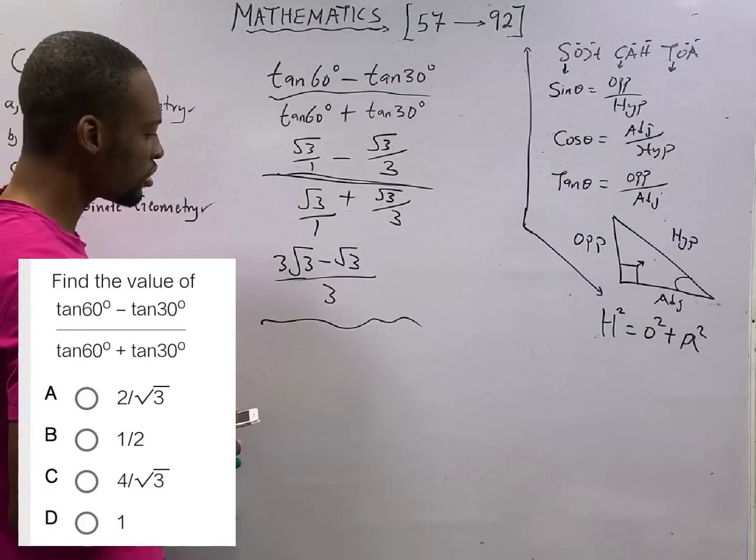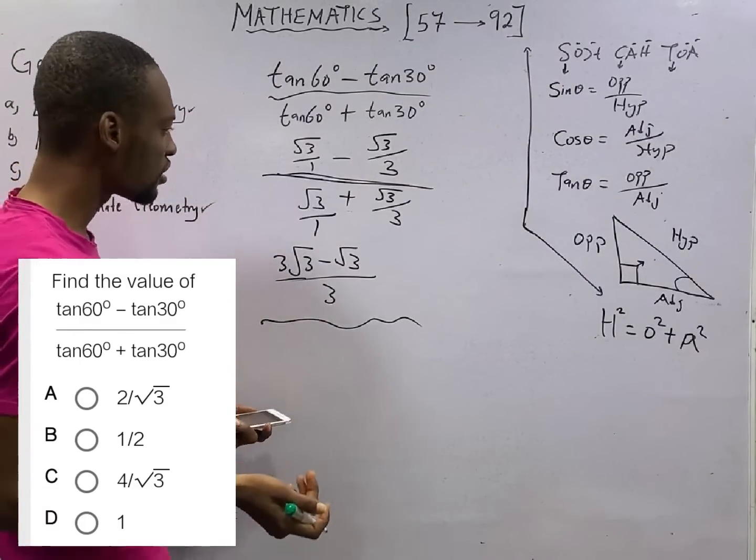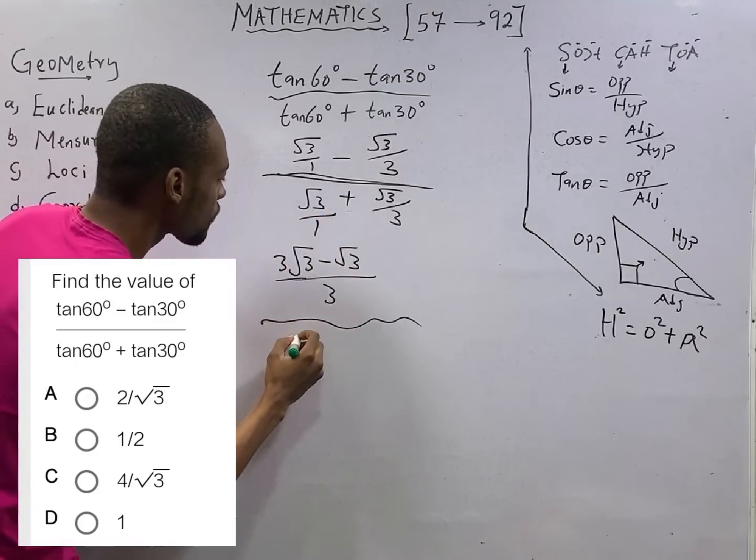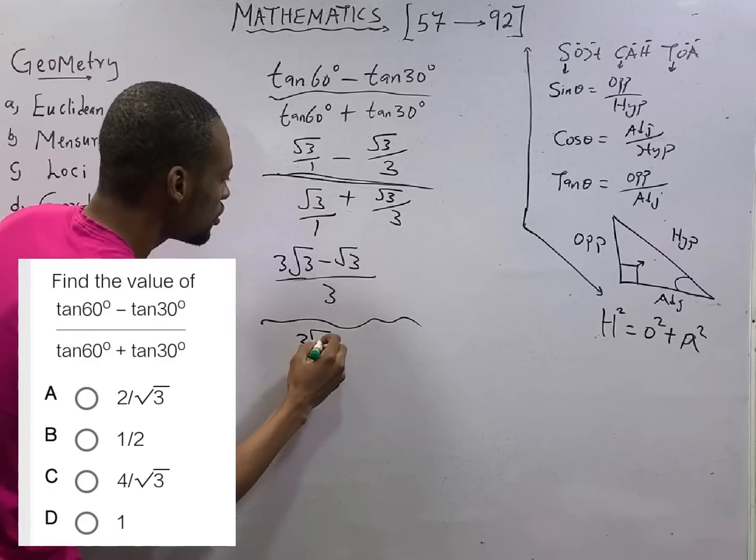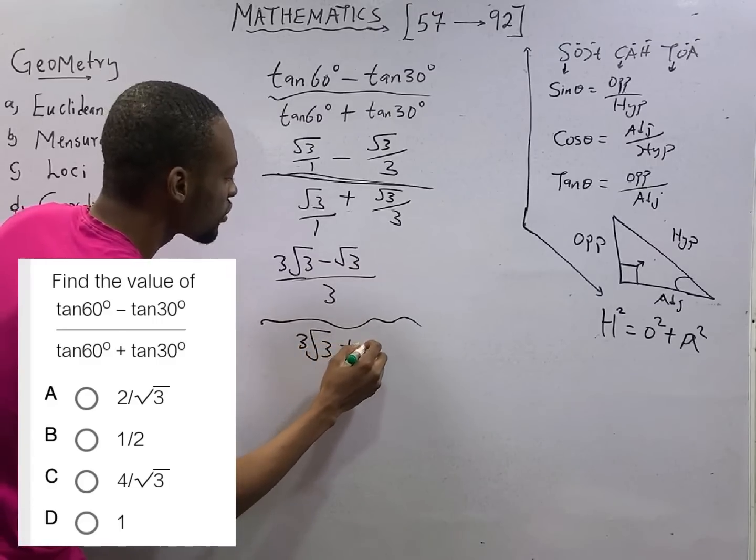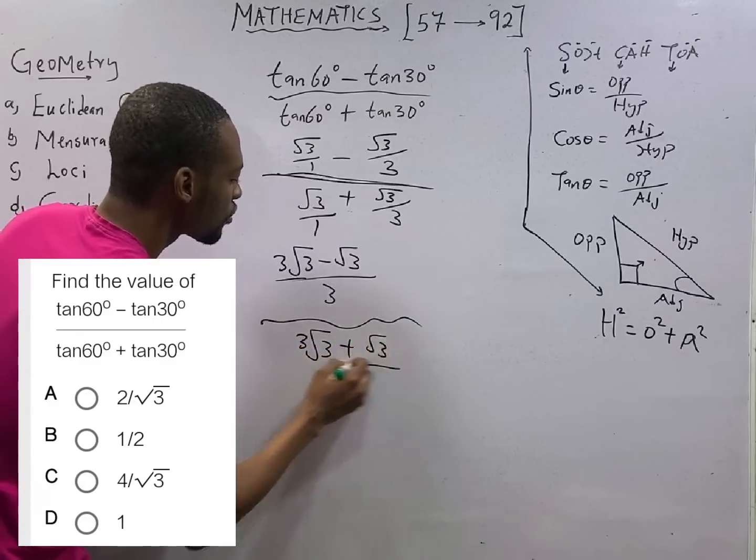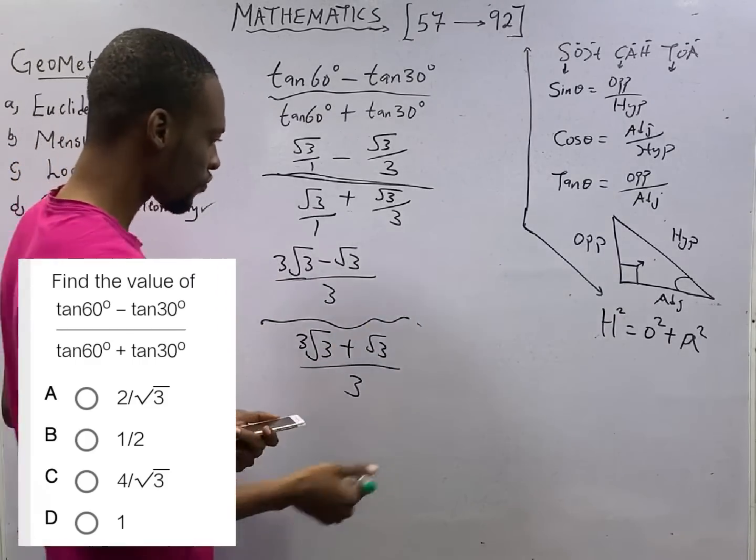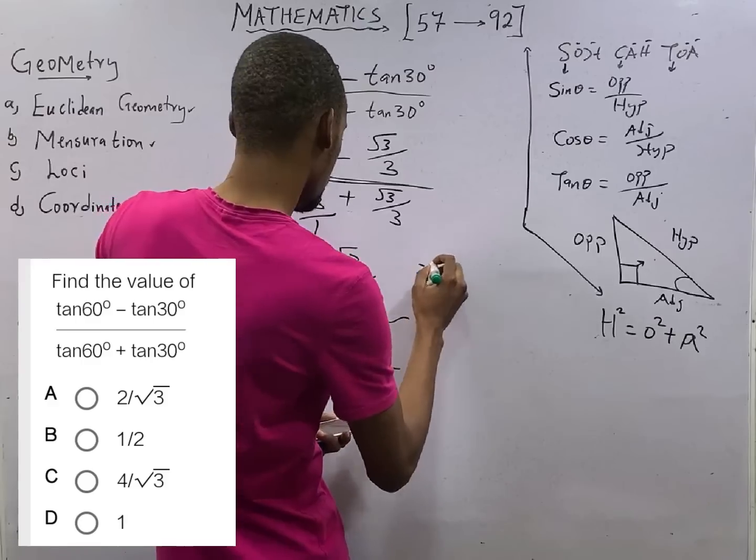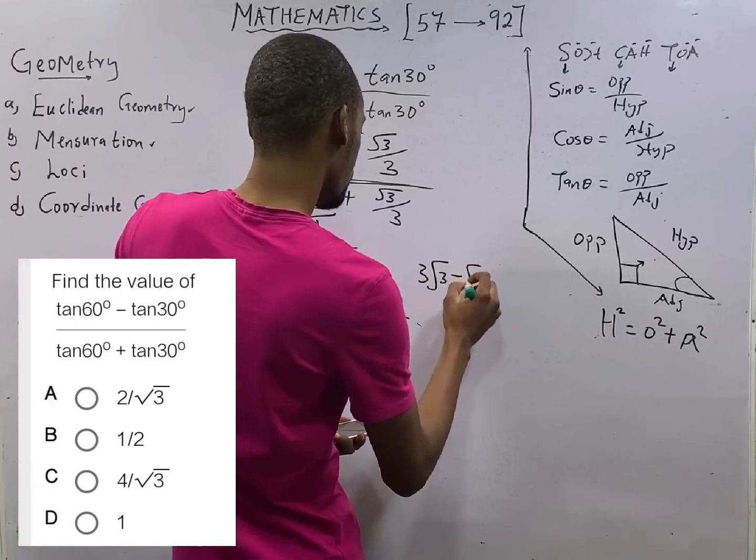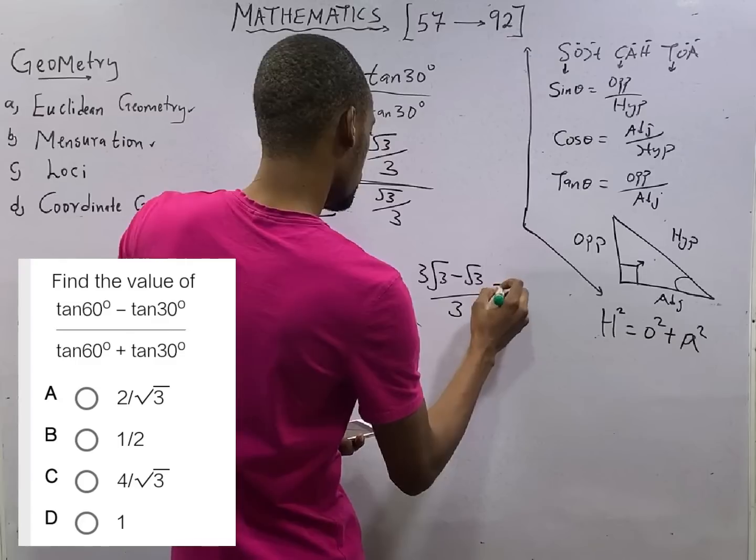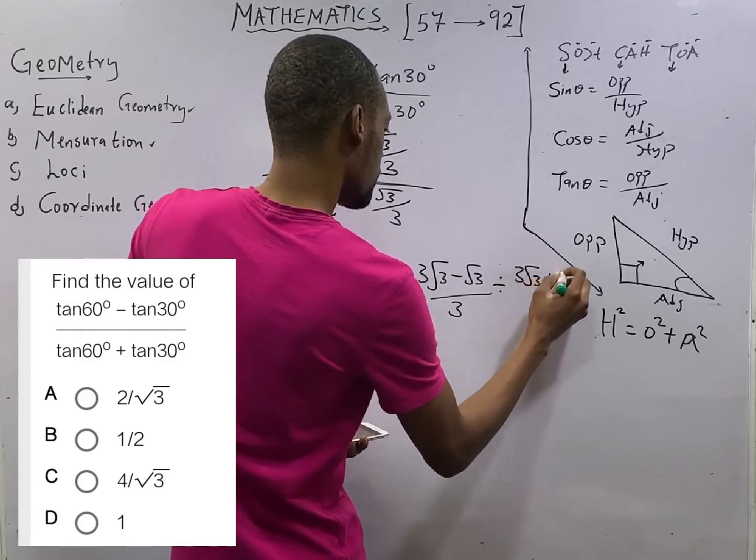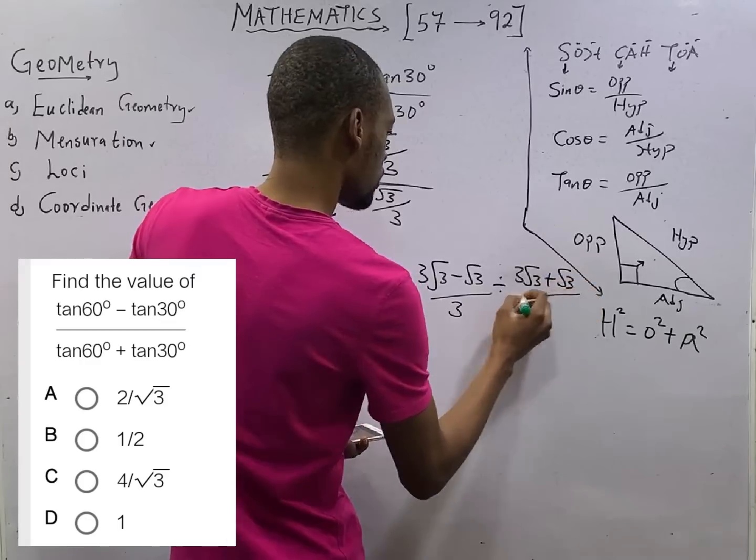For the denominator, we also get the same thing. The only difference is that here is positive, that here is positive. You have 3 root 3 plus root 3 over 3. And this is the same thing as, 3 root 3 minus root 3 over 3 divided by 3 root 3 plus root 3 over 3.